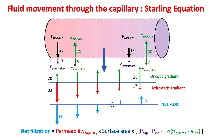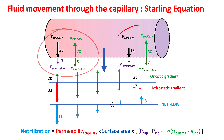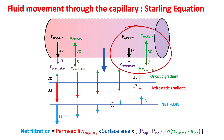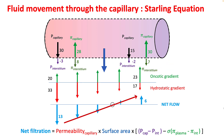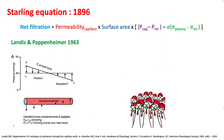This pressure was highest at the arterial side of the capillary, and as we moved towards the venous side, the net flow decreases and even reverses direction. The Starling Equation was formulated back in 1896, and by 1963 it was pretty well established in medical literature.